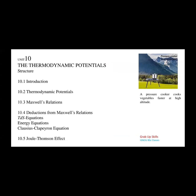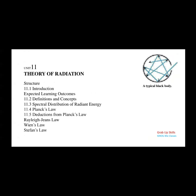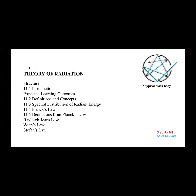The next is Unit 10: thermodynamic potentials. In the thermodynamic potentials, Maxwell's relations plus deductions — we will use the Clausius-Clapeyron equation. The Clausius-Clapeyron equation is important, plus Joule's theorem. And the next is theory of radiation. You will get radiated energy — black body radiation type. You will get Rayleigh's law, Wien's law, and the Stefan-Boltzmann law. These three last ones are the most important — 11.5 topics. The rest of the introduction, outcomes and definitions are all simple, but these three are very important concepts.